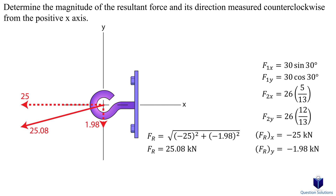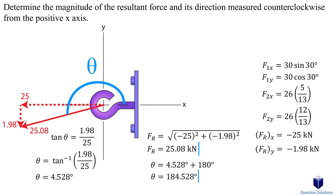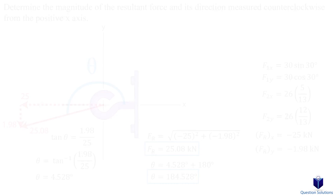Since both components we found were negative, they face opposite to the direction we picked as positive — the x component faces left and the y component faces down. We calculate the angle using tan. This angle is measured from the negative x-axis, but the question wants it measured counterclockwise from the positive x-axis. To convert, we add 180 degrees, which gives us our answer.